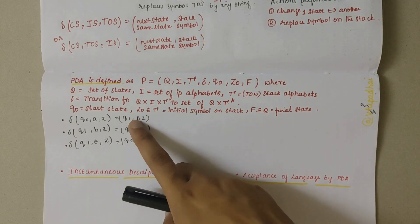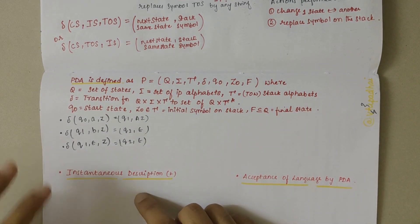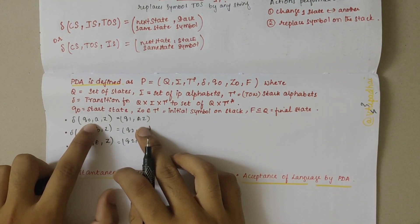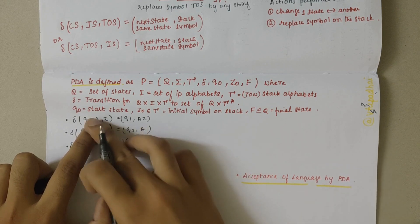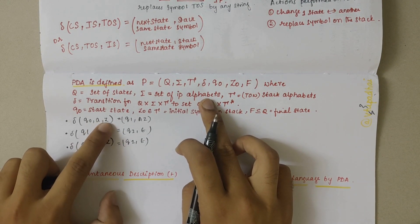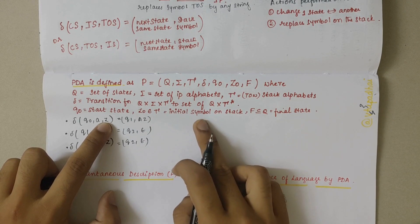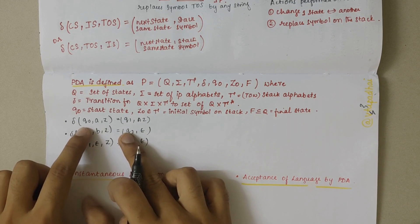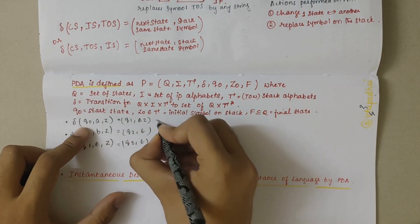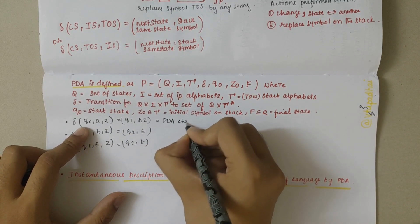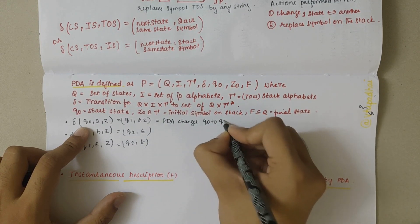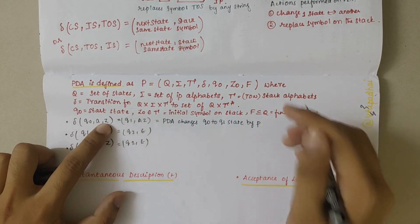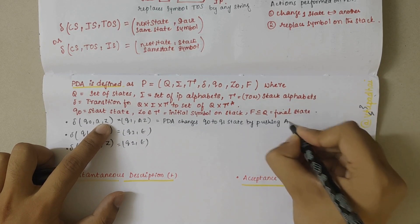Looking at example transitions: the first says PDA is in current state q0, input symbol is 'a' belonging to the set of alphabets, and Z on top of the stack belongs to Γ. This equals q1 comma AZ. This means the PDA changes from q0 to q1 by pushing A on top of the stack — Z was there and now we have AZ.